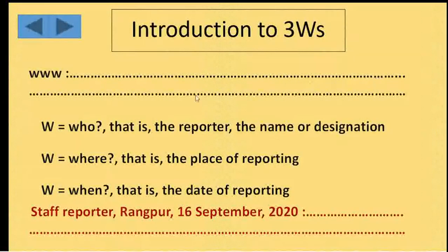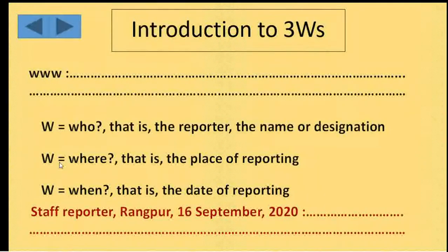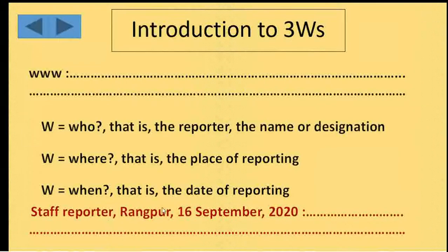Next, introduction to three Ws. Before the lead or the introduction, we have to write something, which we can express using three Ws. First W means 'who' — that is the reporter, the name or designation of the reporter. Second W means 'where' — that is the place of reporting. And the last W means 'when' — that is the date of reporting. Here you find an example: Staff Reporter, Dhaka, 16th September 2020.